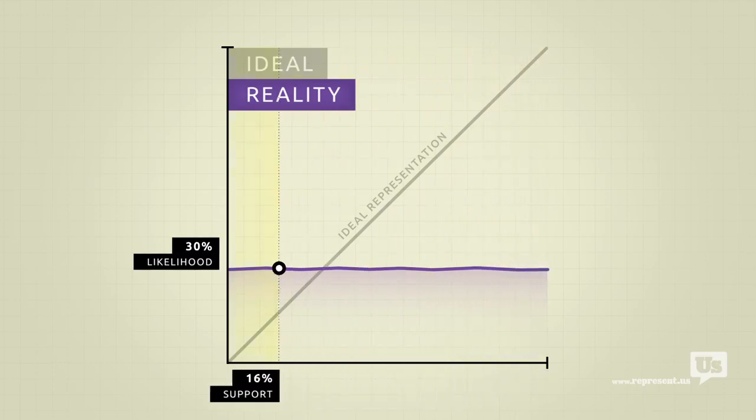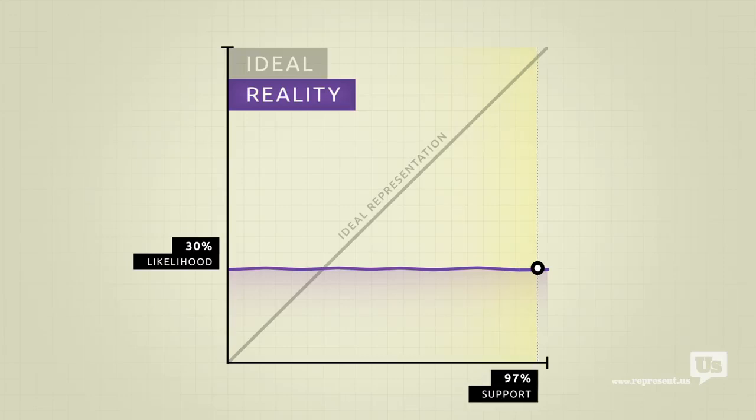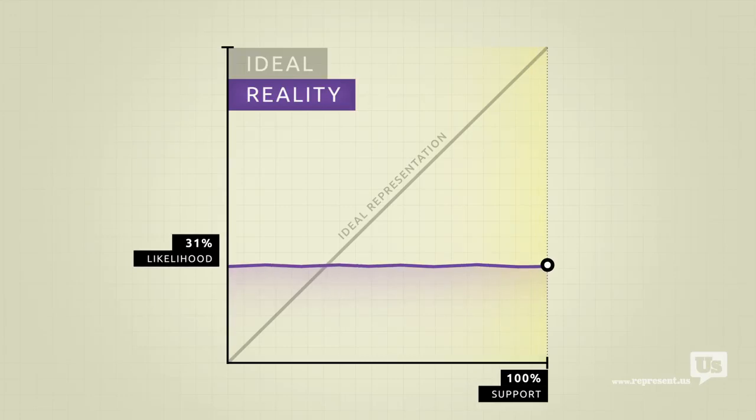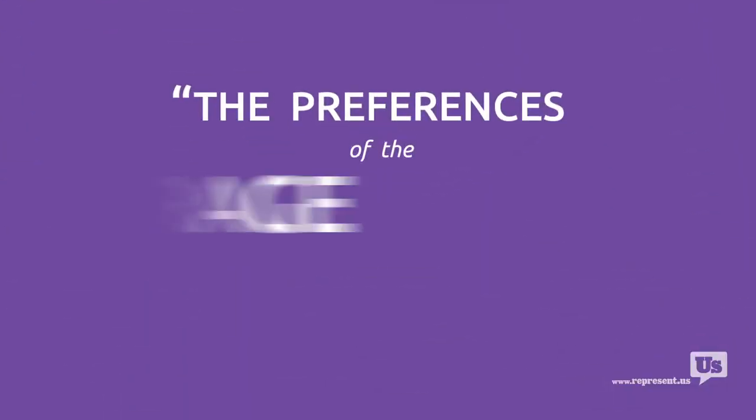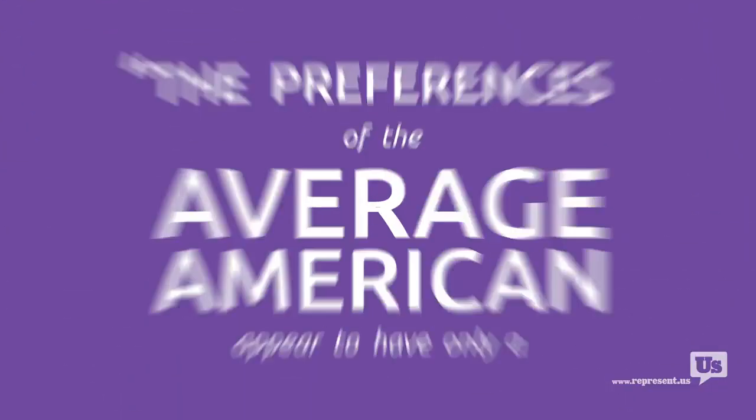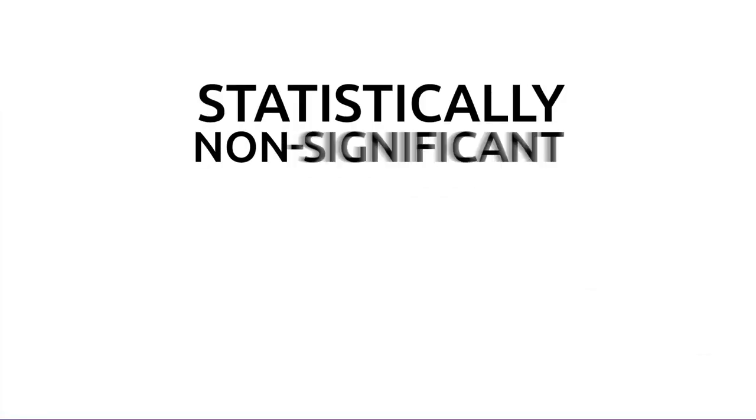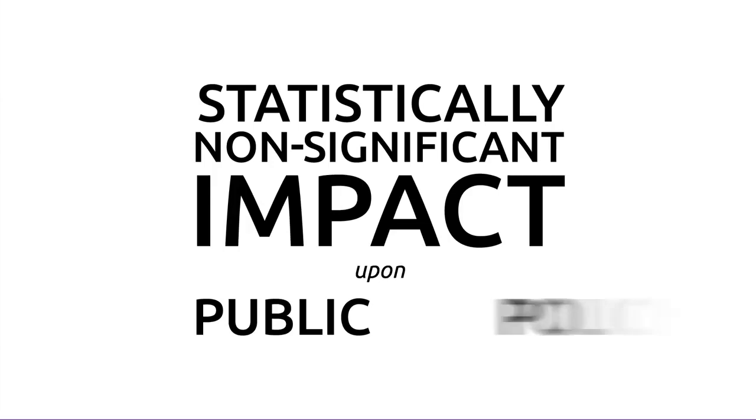This means that the number of American voters for or against any idea has no impact on the likelihood that Congress will make it law. Put another way, and I'm just going to quote the Princeton study directly here, the preferences of the average American appear to have only a minuscule, near-zero, statistically non-significant impact upon public policy.